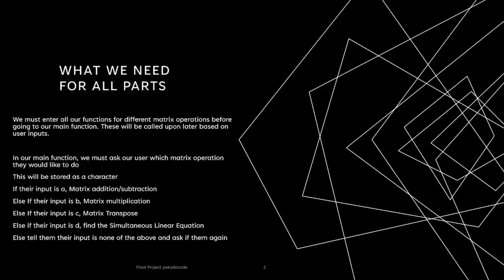If their input is A, the matrix operation that will be done is either addition or subtraction. If it is B, we will multiply the two matrices together. If their input is C, we will find the transpose of the matrix. If their input is D, we will find the simultaneous linear equation of a function with three unknown variables. If none of the above are typed, we will ask the user to go again and type in a valid matrix operation.